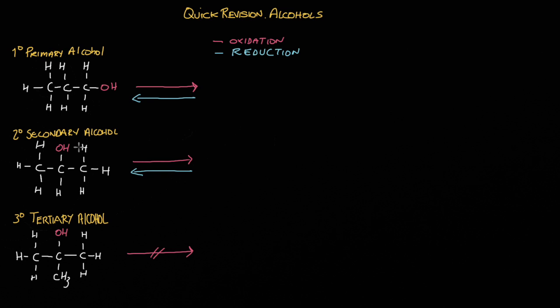With a secondary alcohol, same process. Here's the functional group — it's attached to this carbon, and in this case this carbon is attached directly to one on the right and one on the left, which makes this a secondary alcohol.